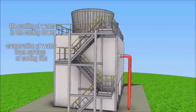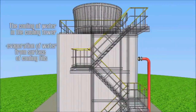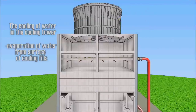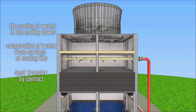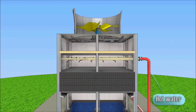How is the cooling tower working? Water in cooling towers is cooled by evaporation of water in the stream of atmospheric air, and by heat transfer through contact with air.